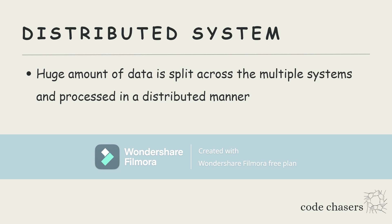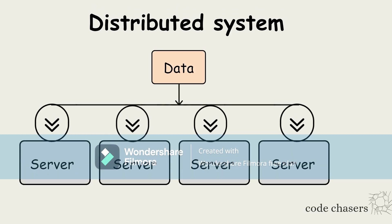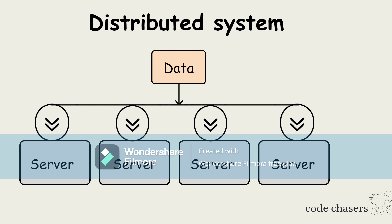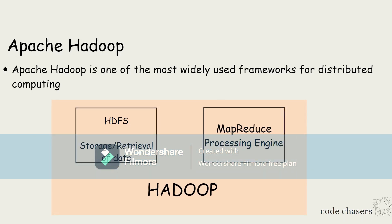In distributed systems, the huge amount of data is split across multiple systems and it is processed in a distributed manner. The processing of data observed in distributed systems is called distributed computing. As you can observe in this diagram, this is a simple diagram showing how a distributed system works.